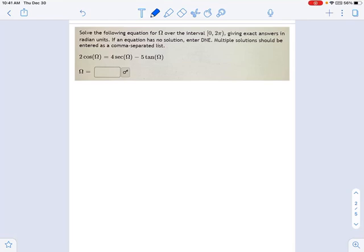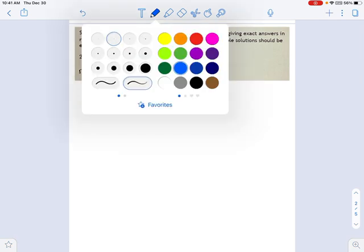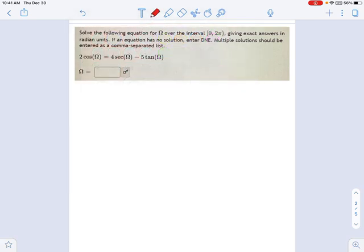So here we have another trig equation to solve. And in this one, you'll notice I don't have one trig function. I don't even have two trig functions. There's three separate trig functions. There's a cosine, a secant, and a tangent.